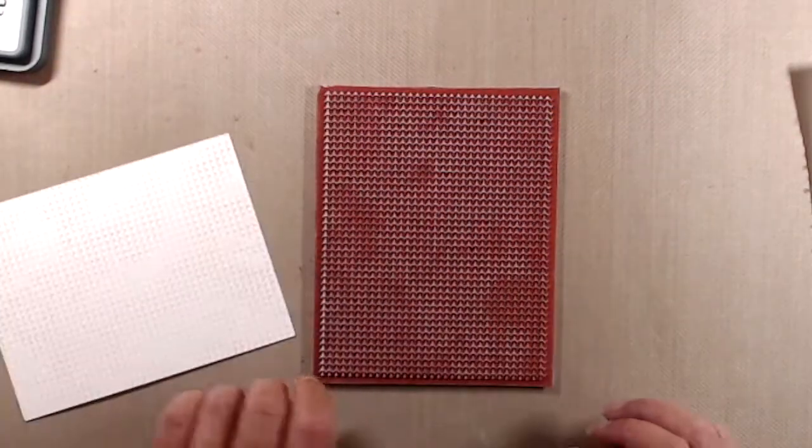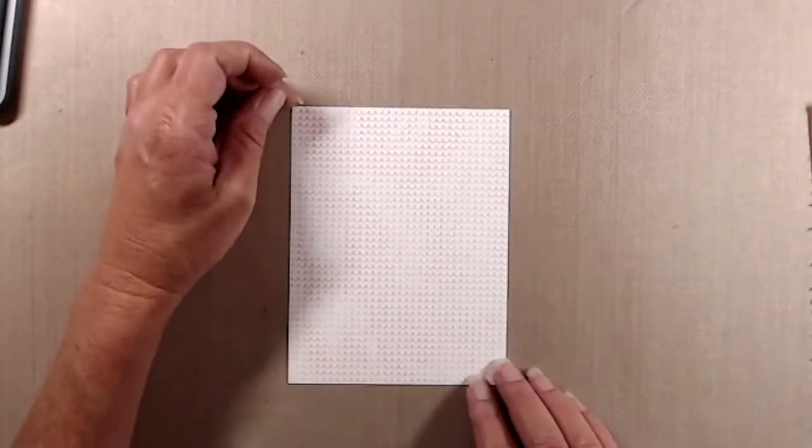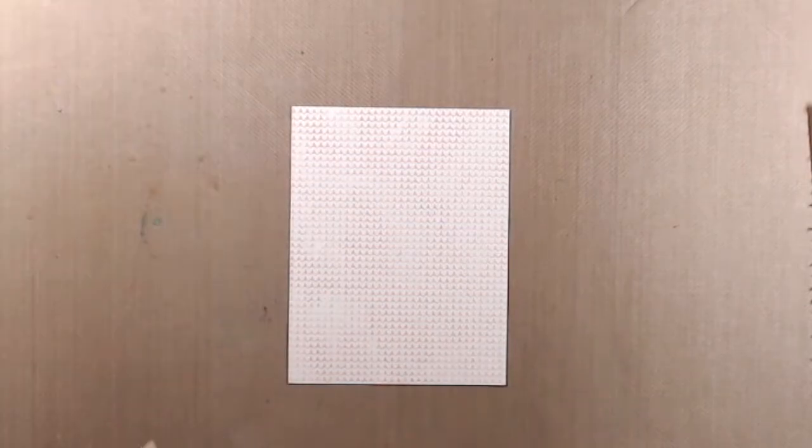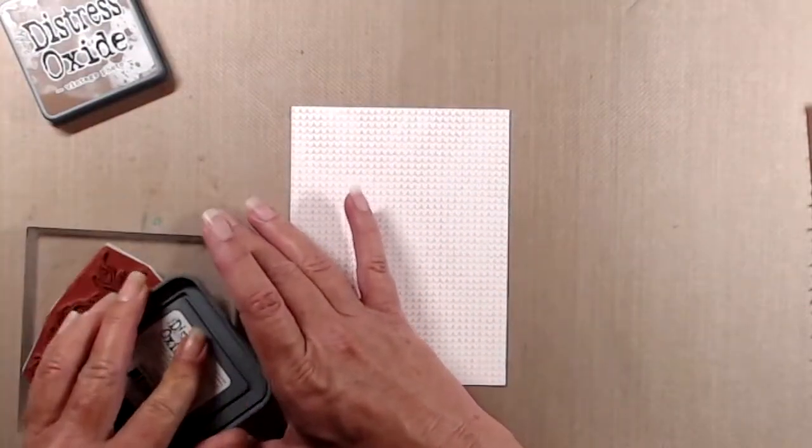The one thing that I love about this background stamp is all of the texture that you get from it, but also the stamp is just slightly larger than a card front panel so you'll get the image from corner to corner, end to end, top to bottom.